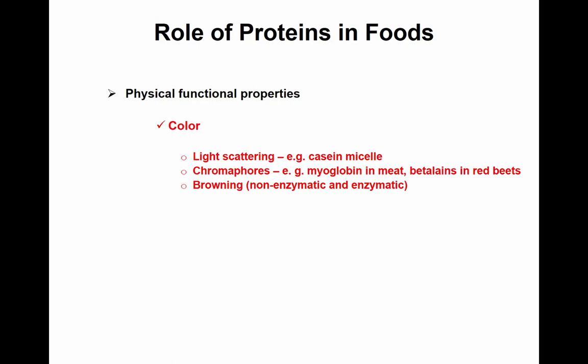Proteins also contribute to physical characteristics of food. We talked about nutrition and physiology, but they have physical contribution as well. Color: casein in milk is white and causes light scattering, giving milk its white color. Chromophores: myoglobin in meat gives the red color. Betalains in red beets also give a red color.